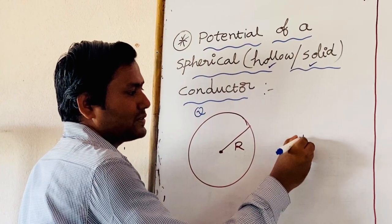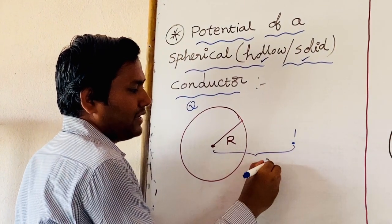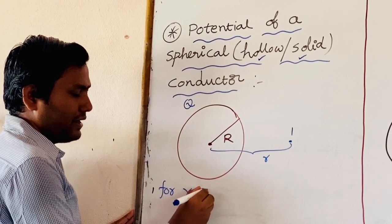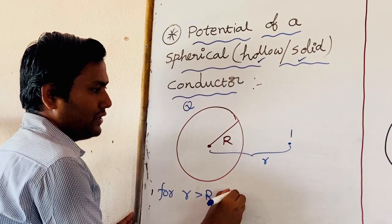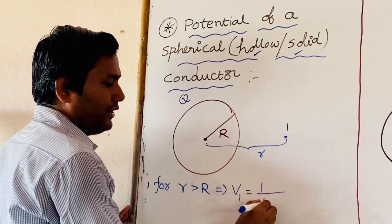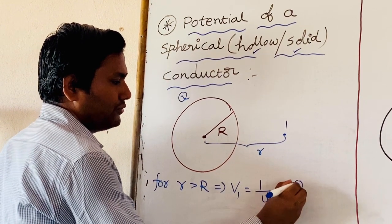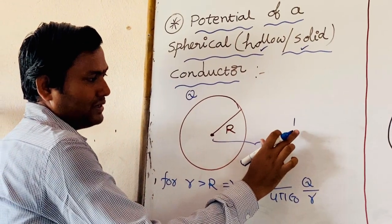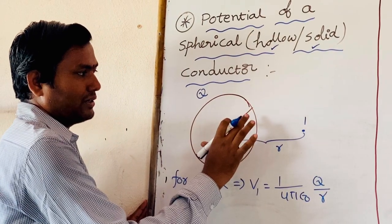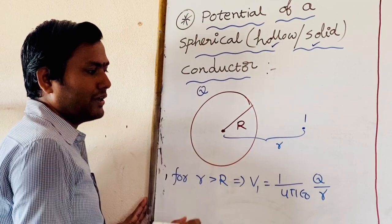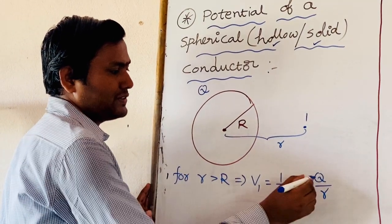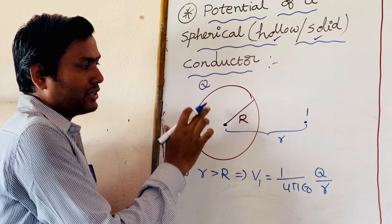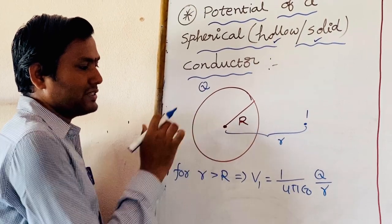Suppose you are taking point 1 at distance r, where r is greater than R. Then V at point 1 is equal to (1/4πε₀) × (Q/r). For outside points like point 1, this spherical conductor — either hollow or solid — behaves like a point charge. So this charge Q for this sphere behaves as a point charge, such that the total charge of this sphere is concentrated at the center.